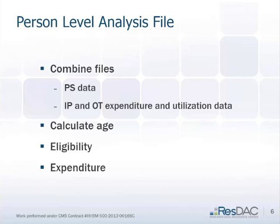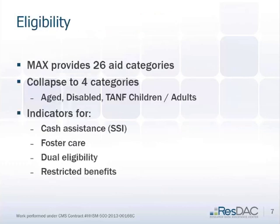We have some algorithms to combine the files back, calculating age, eligibility, and expenditure. MAX has 26 aid categories, which is still a lot. You can combine them into four major categories: the aged, the disabled, TANF children, and TANF adults. Within those, you're combining people with cash assistance versus medically needy and other subgroups — taking all the different disabled categories and combining them into one indicator for disabled.